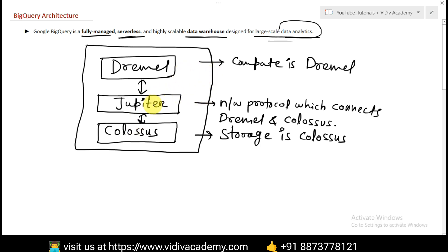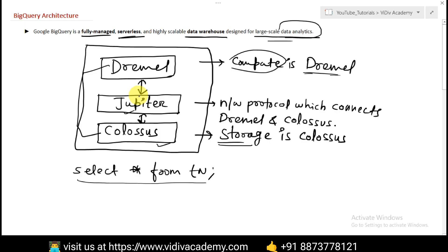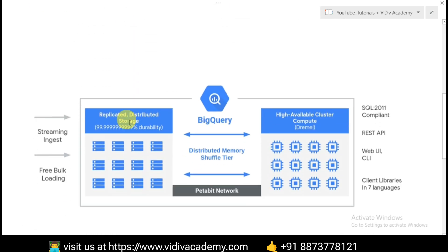Any time you write a query — for example, SELECT * FROM table_name — that query gets stored in Colossus because it's the storage part. When you need to run or execute that query, execution happens in Dremel because Dremel is the computation part. Both Dremel and Colossus are connected to each other with the help of Jupiter. We'll go into this in depth shortly.